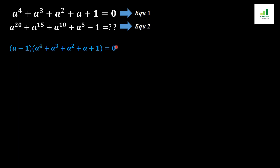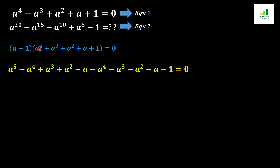In the next step we multiply out both brackets. As a result we get: a to the power 5 plus a to the power 4 plus a cubed plus a squared plus a, minus a to the power 4 minus a cubed minus a squared minus a minus 1.